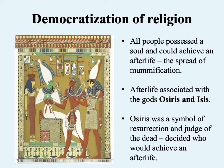Certain religious ideas become very prominent in connection with the afterlife, probably most importantly having to do with the gods Osiris and Isis, who are brother and sister and husband and wife. It was also a very common practice in ancient Egypt for pharaohs to marry their sisters. Osiris is going to be a symbol of resurrection and a judge of the dead, deciding who would actually achieve an afterlife. There's a myth where he is killed by his brother Seth, cut up into pieces tossed into the Nile, and then his sister-wife Isis recovers the pieces, stitches him back together, and he is reborn. Because of this experience, he has the responsibility for judging the dead.